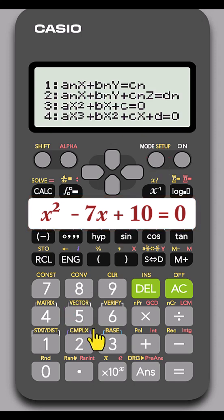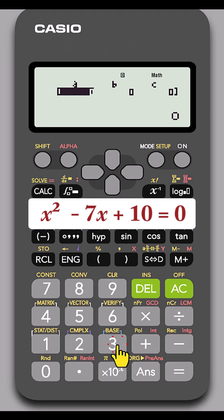Then select 3 for quadratic. Remember the standard form. A is the coefficient of x squared, which is 1 here. So press 1 then equals.